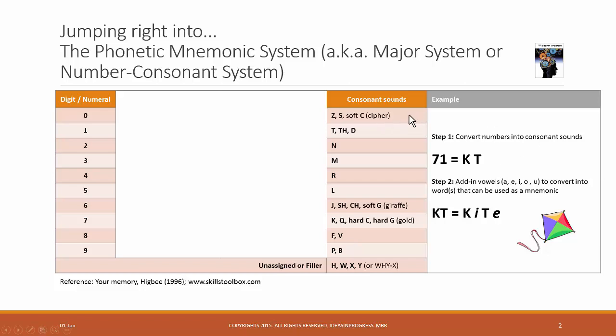So now, once we have the consonant sounds assigned to the digits 0 to 9, we basically have a system or a system of codes that we can use to remember numbers or facts. Before I show you how to basically remember numbers or facts based on this system, two important points.